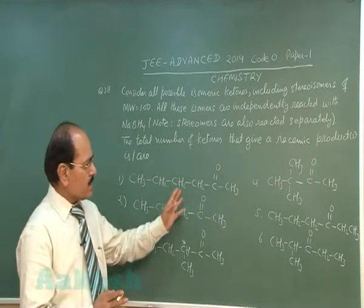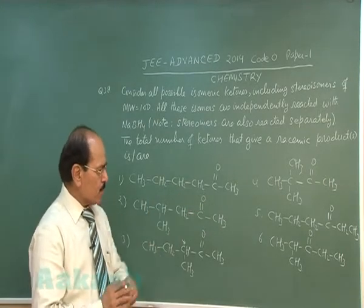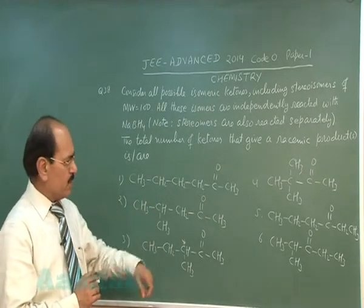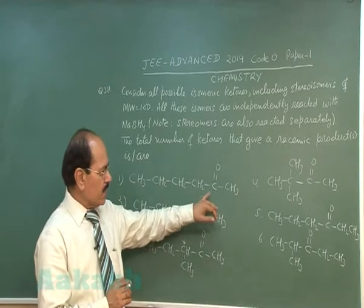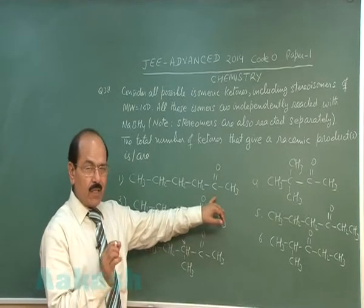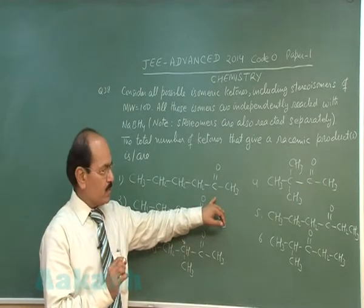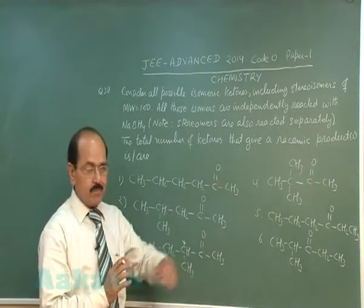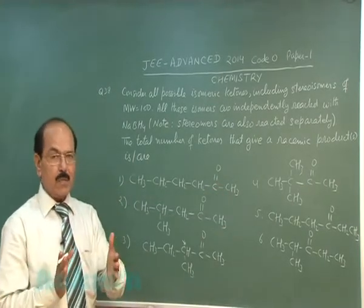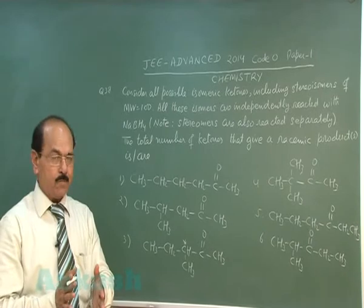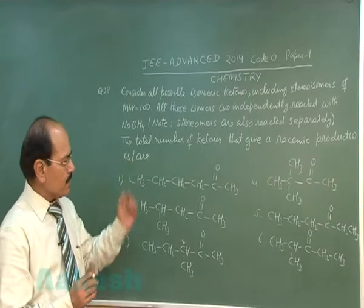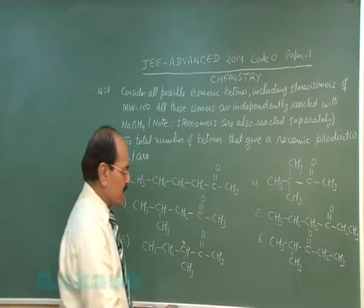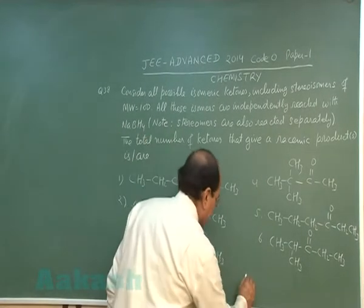The rest of the compounds on reduction will give a secondary alcohol with a chiral centre, so they will give the racemic product. The answer for the given question is 5.